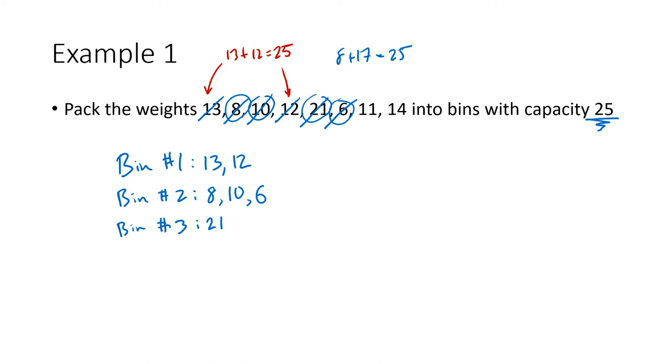Next up I've got an 11 and a 14, and again we see, 11 and 14, that adds up to 25. So we'll put those together into bin number 4: 11 and 14. I've used up all the numbers on my list, so this is my solution to this problem.